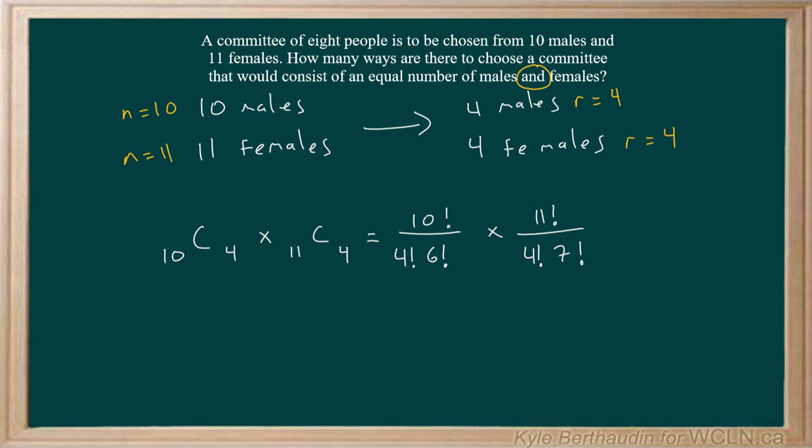And if we were to go ahead and plug all of that into a calculator, do the math, we would find the number of ways we can choose a committee ends up being 69,300 different ways.